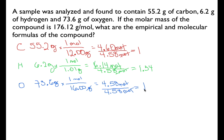So now we know the ratio of carbon to hydrogen to oxygen is 1 to 1.34 to 1. However, a chemical formula cannot contain a decimal number — it must be whole numbers. So we have to convert this value into a whole number.